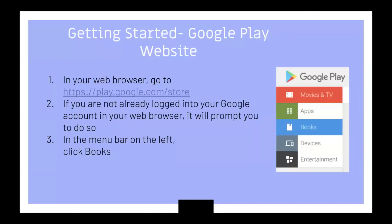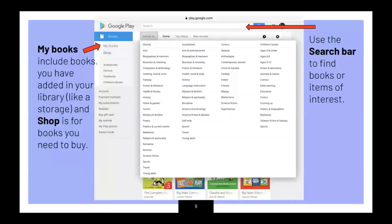Getting started. Google Play website. In your browser, go to play.google.com store. If you are not already logged in to your Google account in your web browser, it will prompt you to do so. Next, in the menu bar on the left, click Books. Here, My Books includes books you have added in your library, like a storage, and Shops is for books that you need to buy.